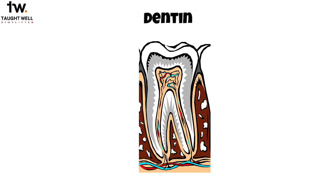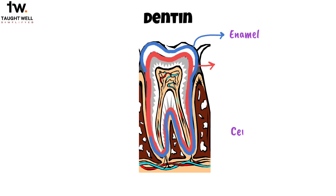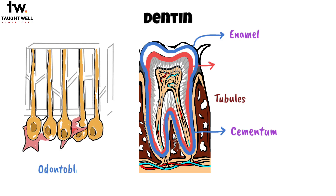Dentin is a hard tissue that makes up the bulk and general form of the tooth. If we were to take a cross-section of a tooth, the dentin would be the thick layer right beneath the enamel on the crown and beneath the cementum on the roots. What's interesting about dentin is that it's filled with tiny tubes or tubules that run throughout its thickness. These tubules are crucial because they contain processes of specialized cells known as odontoblasts.